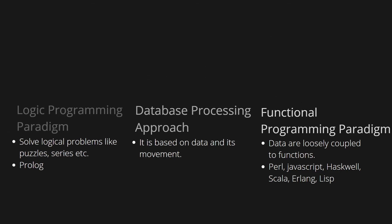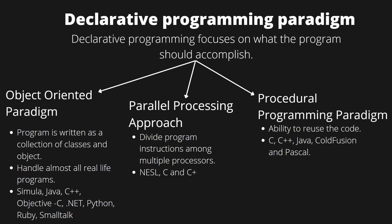Next we have the declarative programming paradigm, which focuses on what the program should accomplish. In terms of definition, imperative and declarative may sound similar but they are very different. In imperative we focus on how the program should achieve the end result, while in declarative we focus on what the program should accomplish. That is a key difference between the two. Under declarative programming paradigm we have object-oriented, parallel processing, and procedural programming paradigms.